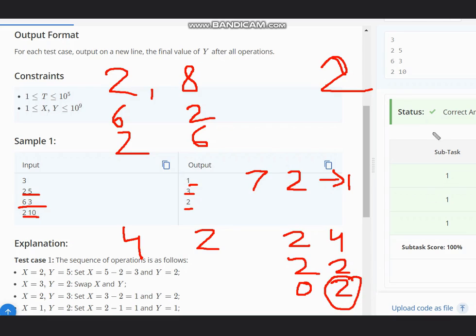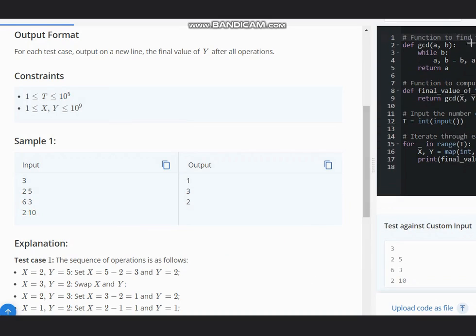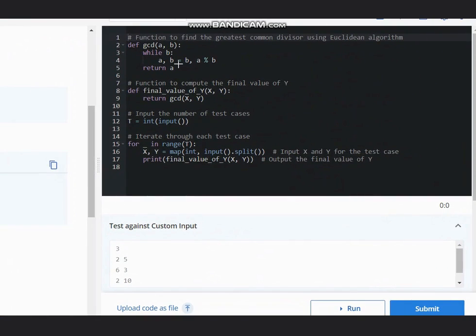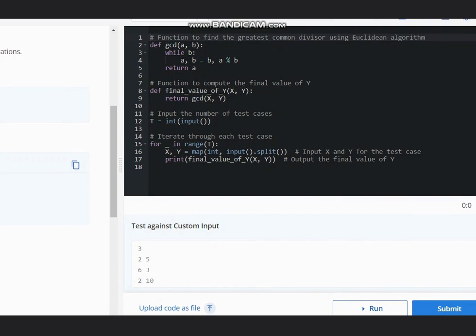I hope you all understand this. Now look at the code to understand it in a better way. Going to the code, here is the code. We are simply just calculating the GCD.